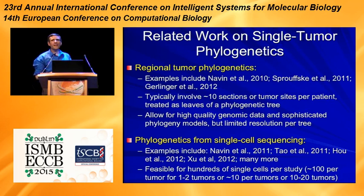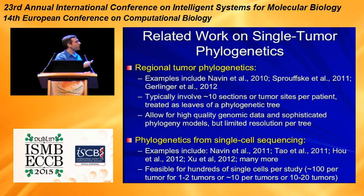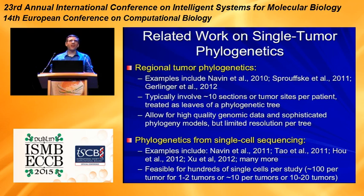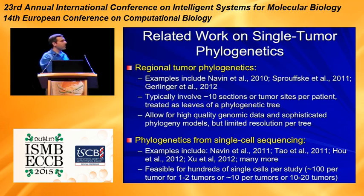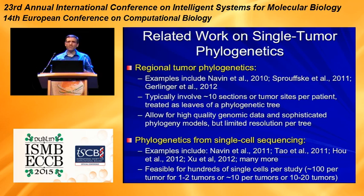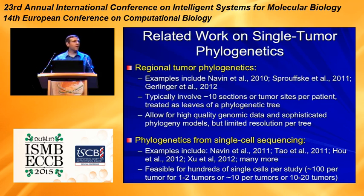This is a topic that has really exploded in cancer research in the past few years. A lot of the work going on now uses an approach I'll refer to as regional tumor phylogenetics — essentially adapting those earlier methods by thinking of a tumor as a relatively small number of sites that are more or less homogeneous, averaging out the heterogeneity within local regions. As long as you've got enough heterogeneity between regions, you can construct reasonably small trees. This has important advantages: it lets you use very sophisticated genomic methods because you've got a lot of genetic material even in a small region, and it lets you use sophisticated phylogenetic tree algorithms because you're looking at fairly small trees.